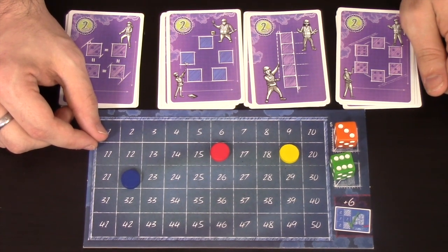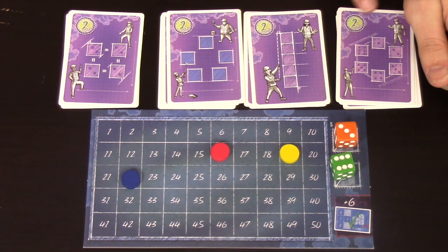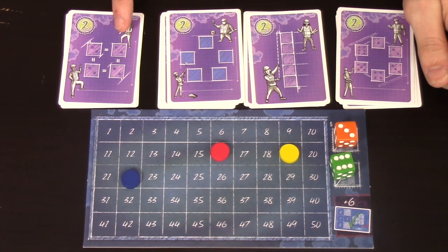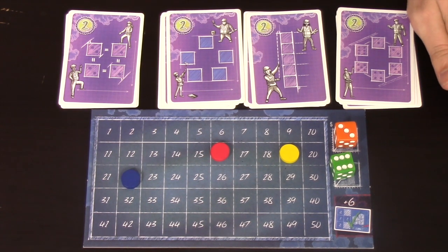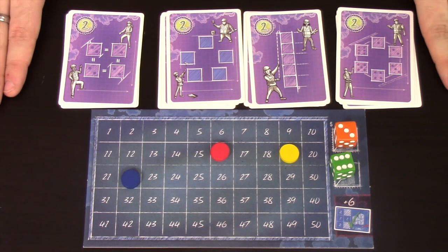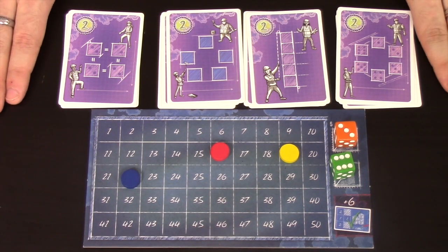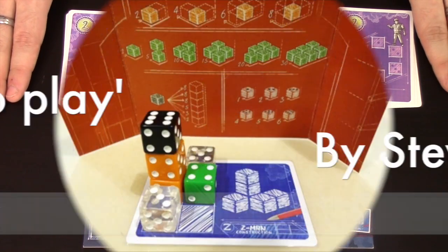And that is the game of Blueprints. You play over three rounds, and you count up your victory points that you've earned through the cards that you've gained during the game, to add them up and see who's won. This has been Steve from the Dice Cup in Nottingham. Thank you very much.